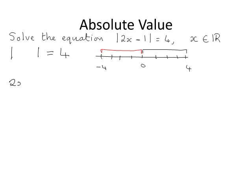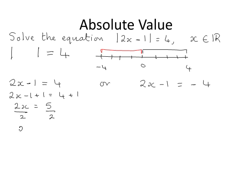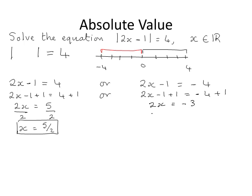So that means two x minus one is equal to four, or two x minus one is equal to minus four, since these are the only two numbers that have a distance of four from zero. Solving for x by adding one to both sides and then dividing both sides by two gives x equal to five over two. Solving the other case gives x equal to minus three over two.